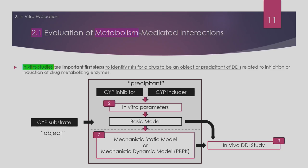Because the Bayesian model is conservative, it may overpredict DDI. So we can use more practical static or dynamic models for better prediction. These models are described in section 7.5. If DDI is not expected, no clinical study is necessary. If DDI is predicted, then an in vivo DDI study is required, which is dealt with in chapter three.